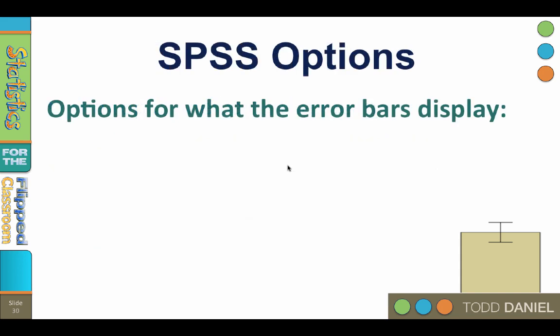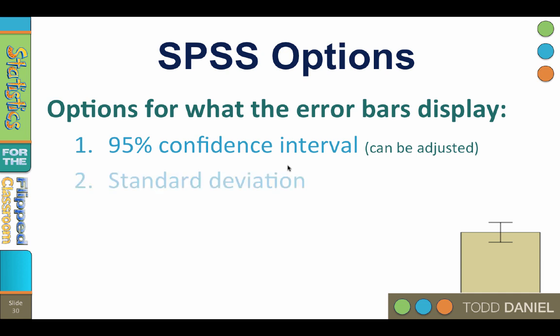We have three options in SPSS for what estimate the error bars display. A 95% confidence interval. The error bars show the range of scores for the mean, and we are very confident that the real mean is within that range. The error bar could also display the standard deviation for that variable, the average amount of variability in the data. An error bar could also show the standard error of the mean. All of these options are available in the element properties dialog box.